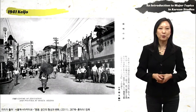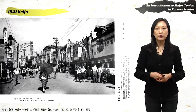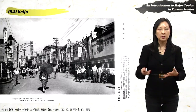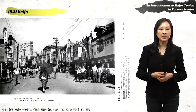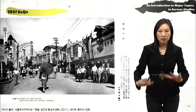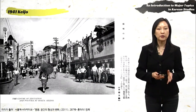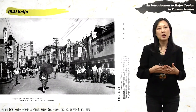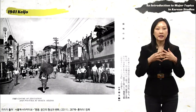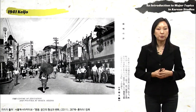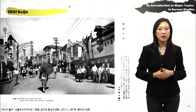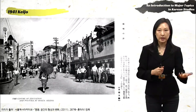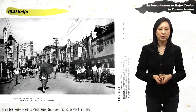By 1941, Seoul is really quite a metropolis and thoroughly modernized. You can see the power lines and electricity. The people are wearing modern-style clothing. The students are in school uniforms. And there is this thorough blending between Koreans and Japanese — you can see one person wearing a Japanese kimono. Keijo was the Japanese name for Seoul during the colonial period.